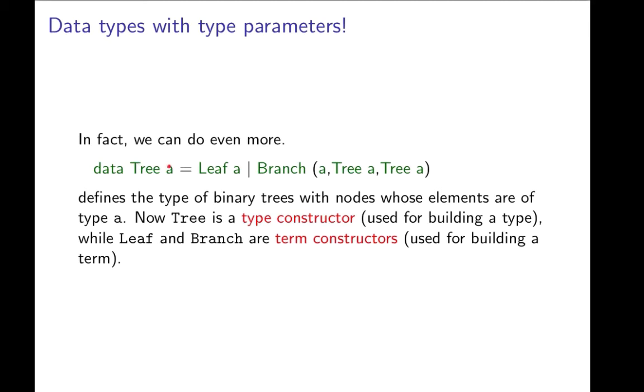And this is what we do here. The type tree of a, a value trees, has values that are leaves that have a value of type a. All their branches that have a root of, which is of type a, and two subtrees that are of type tree of a.